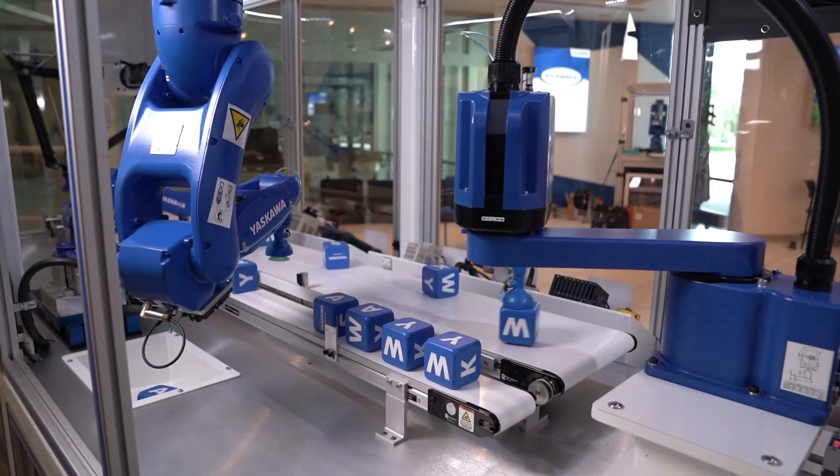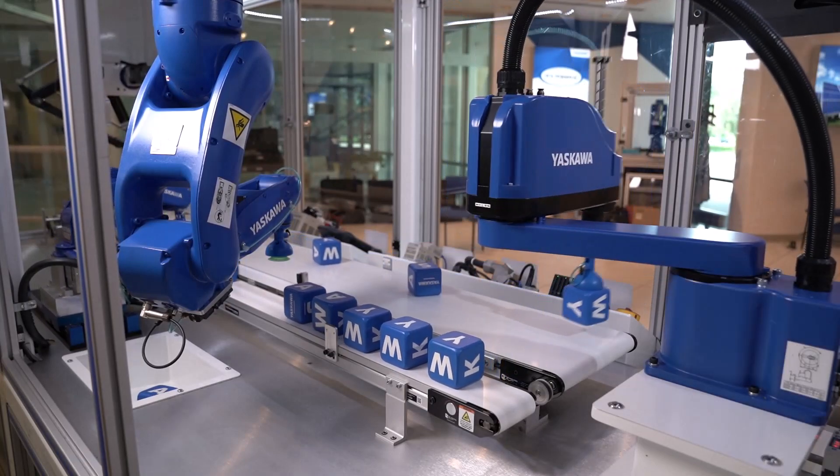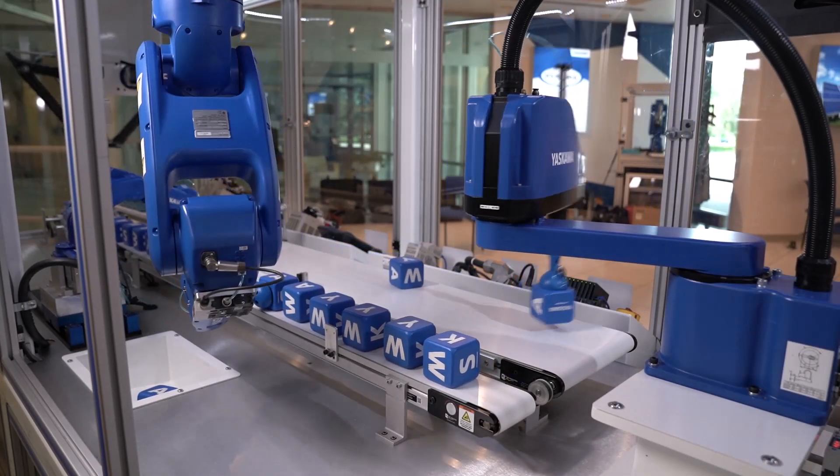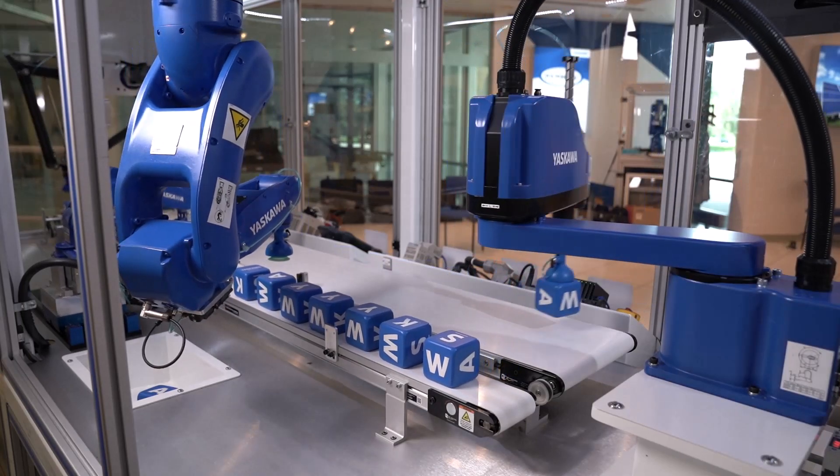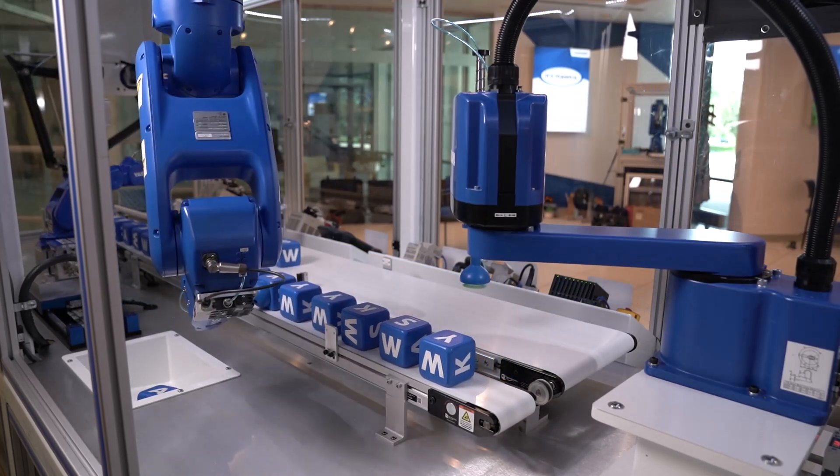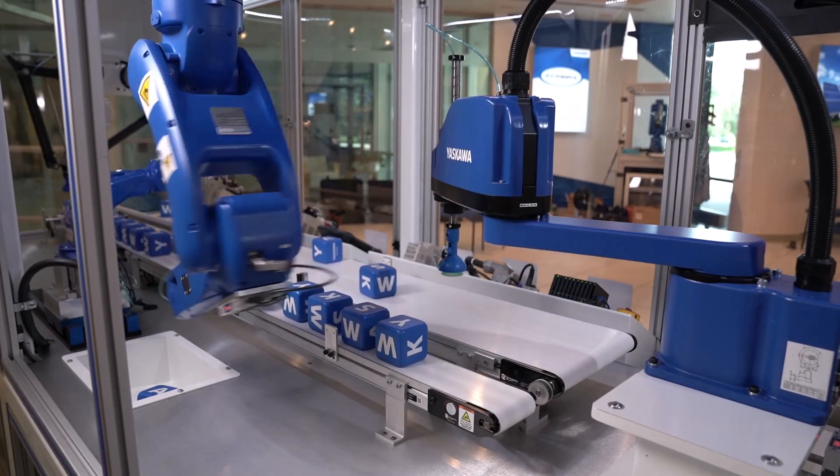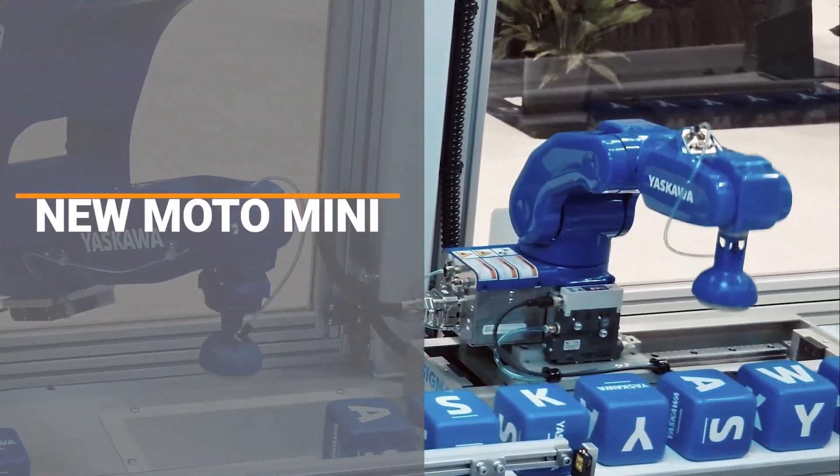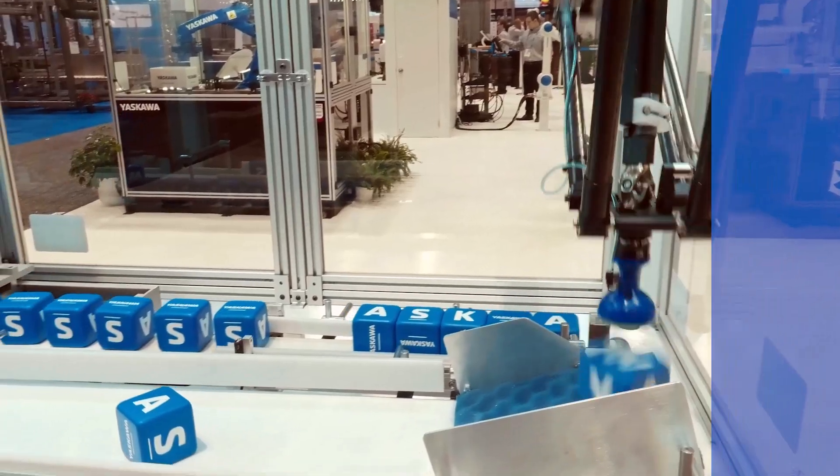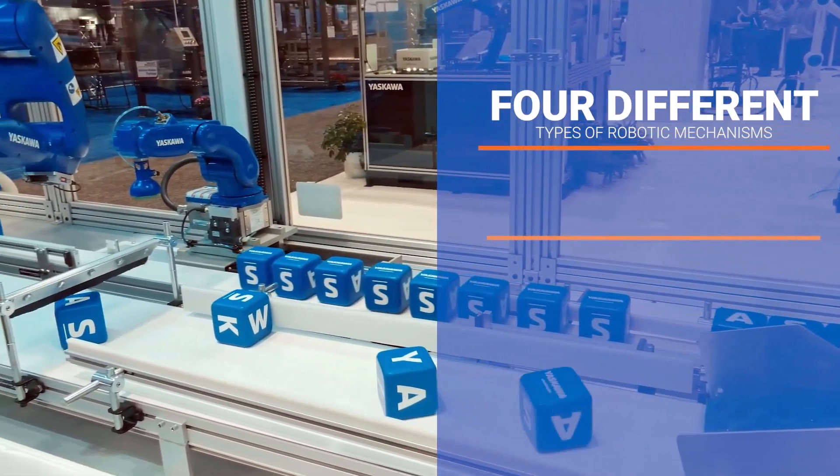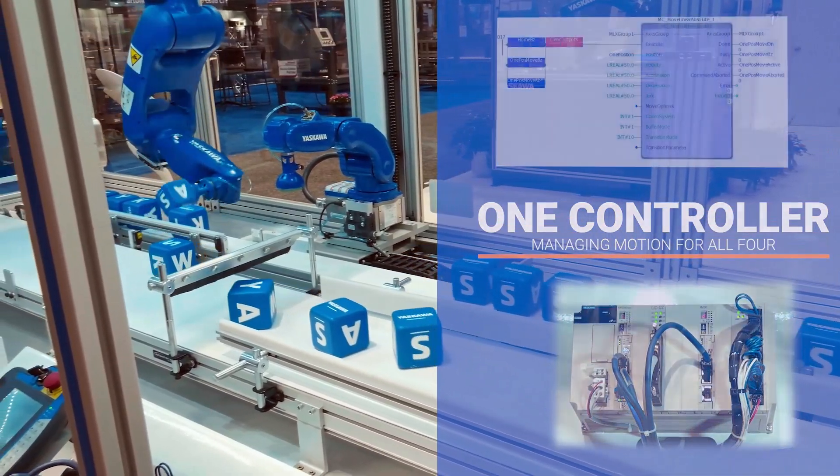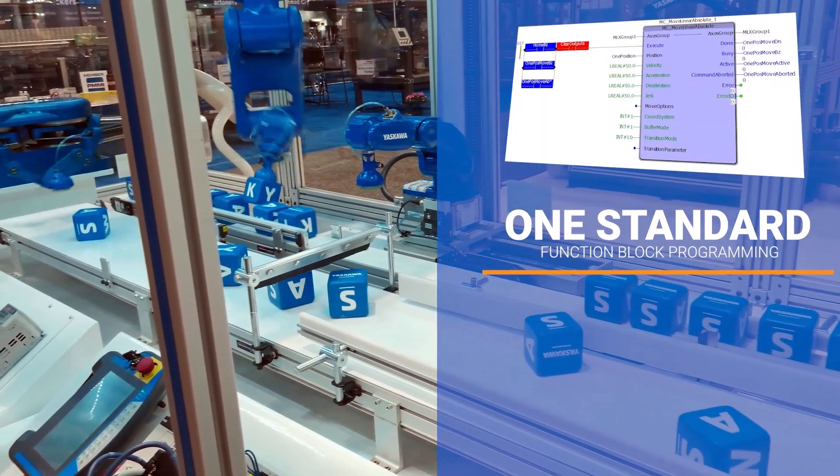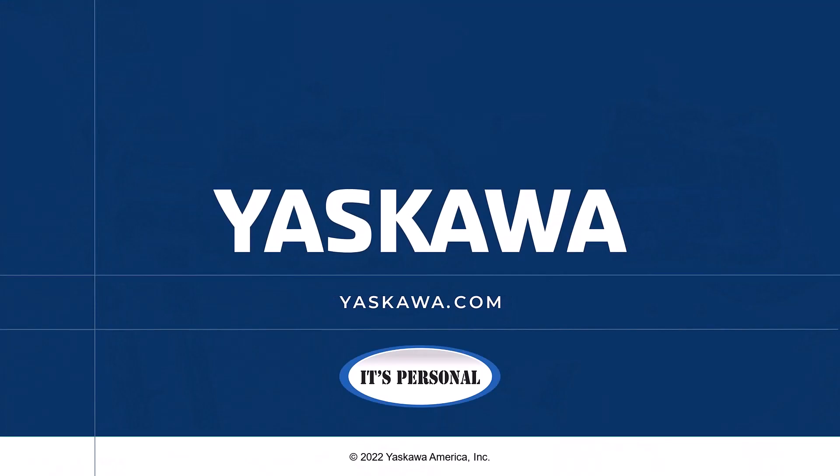In closing, I'll leave you with a working example of singular control on a demo machine built by Yaskawa. This machine uses the MP3300 IEC machine controller to run three conveyors, a SCARA robot, two six-axis robots, a linear motor, and a delta robot. For more information, please visit yaskawa.com.